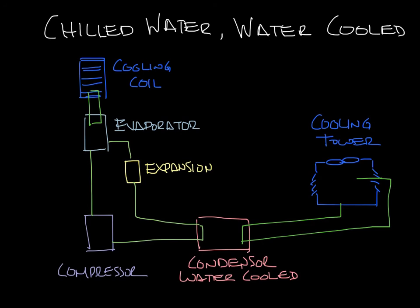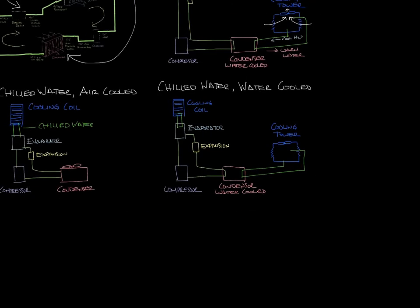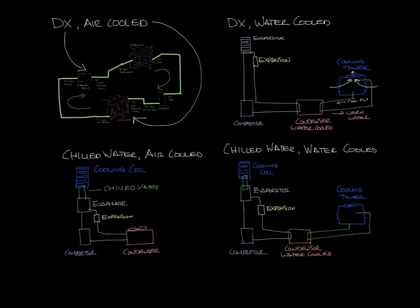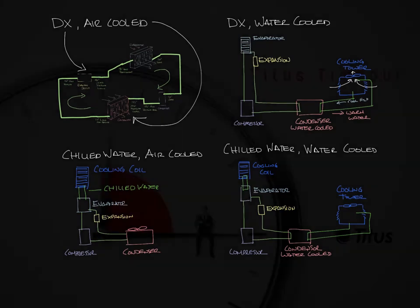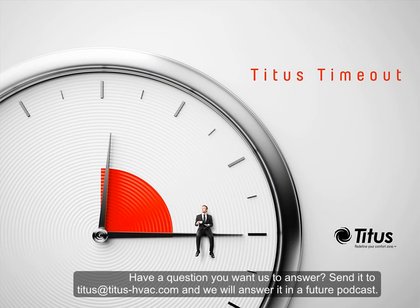So there are the four basic refrigeration systems. Let's bring them all back onto the screen. You can see the DX air-cooled, DX water-cooled, chilled-water air-cooled, and chilled-water water-cooled systems. Don't forget to subscribe to our YouTube channel, and thanks for taking a time out with us.